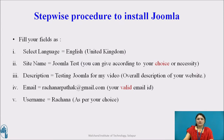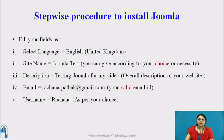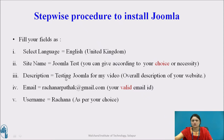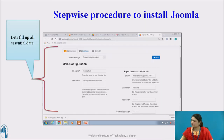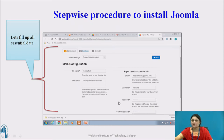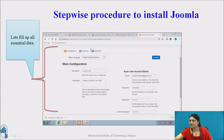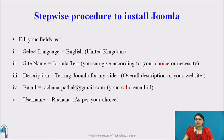Next step is to configure Joomla. Fill up all the essential data — complete all the fields and click on next. Make sure you fill up all mandatory fields. The screenshot shows fields for name, password, and description. I have given 'Rachna' as a username — you can give any of your choice. Site name is 'Joomla test'. Fill in your description, email, username, password, and confirm password. One important thing: give a valid email address, as you may need to verify your account for confirmation. Fill in all required fields including select language, site name, description, email, username and then click next.